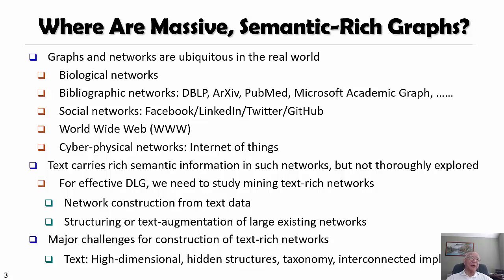For this, we need to think about how we can do network construction from text, and how we can do structuring or text augmentation on large existing networks. That brings a major challenge: texts are very high-dimensional with hidden structures, they have taxonomy information, and they are interconnected implicitly. There are lots of issues.